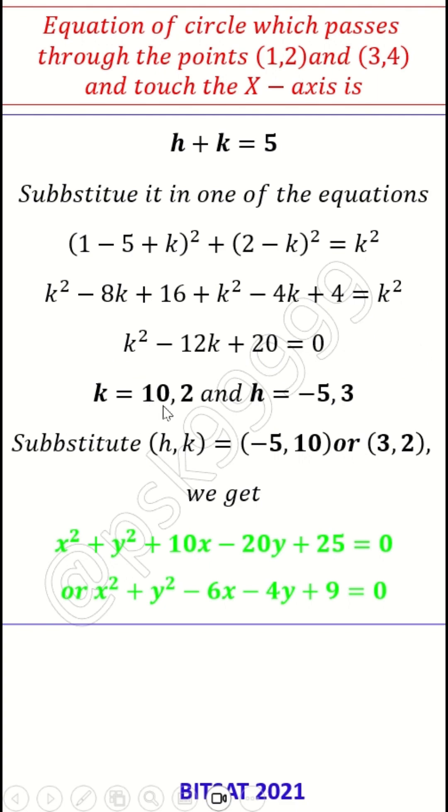From this I can get my k values 10 and 2, and if I substitute it back in h + k = 5, I get h as -5 and 3.